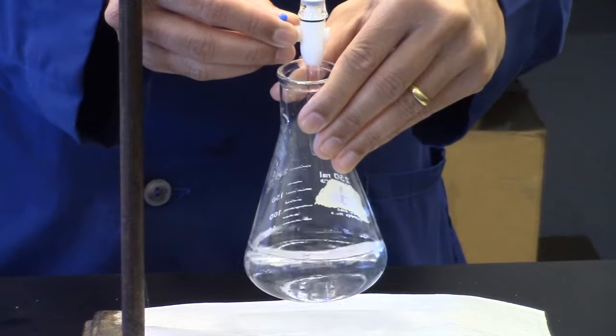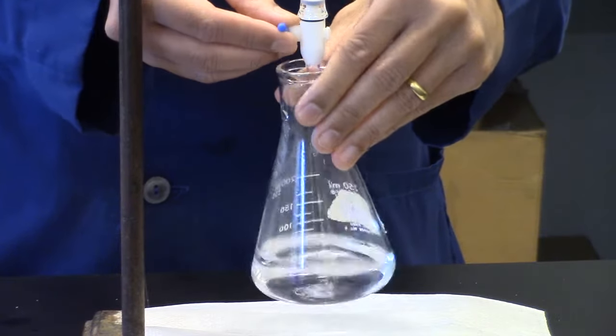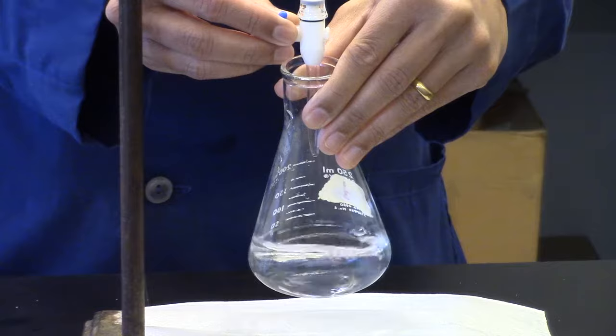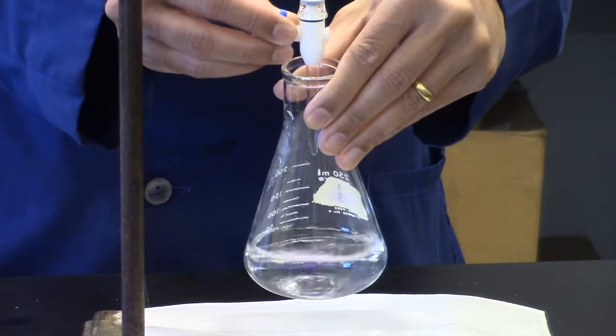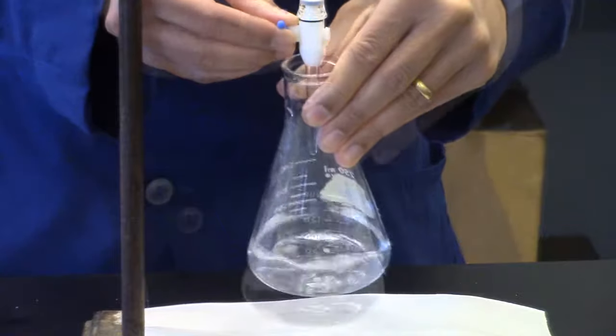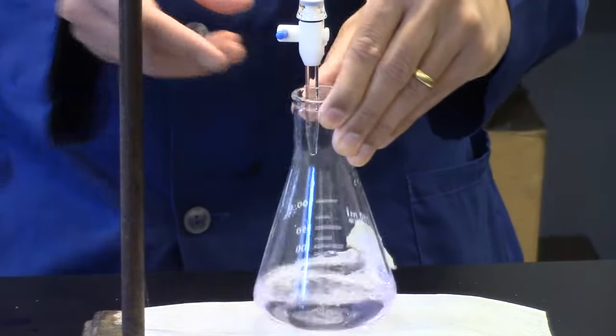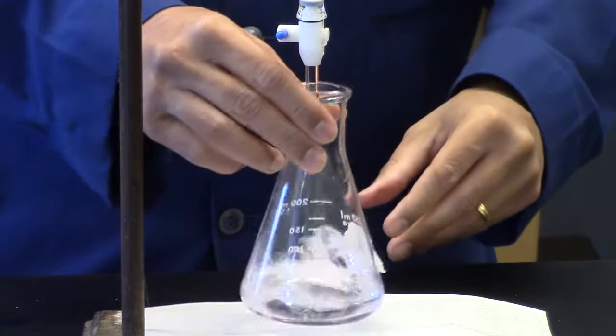At this point, add sodium hydroxide by the drop until you get a pale pink color endpoint. At the perfect endpoint, the pink color will disappear after 30 seconds.